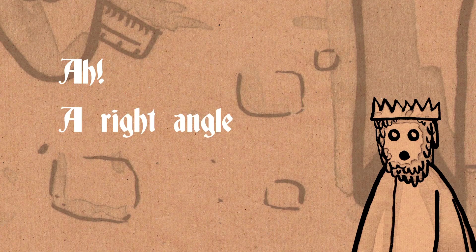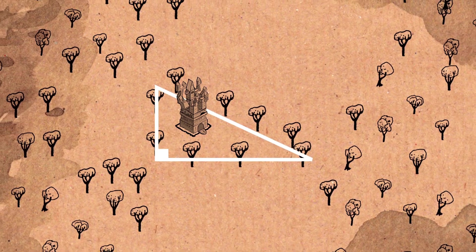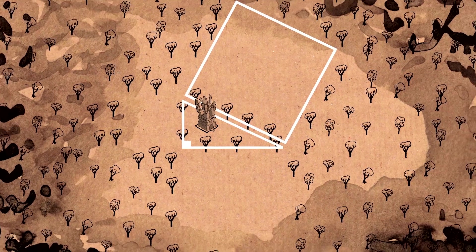Ah, a right angle triangle. And then I have a square piece of land whose edge is the side of the longest side of my triangle.